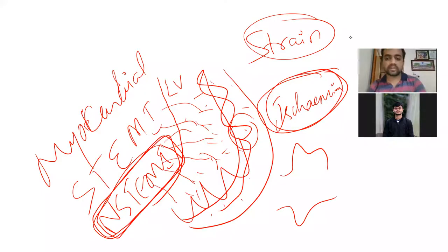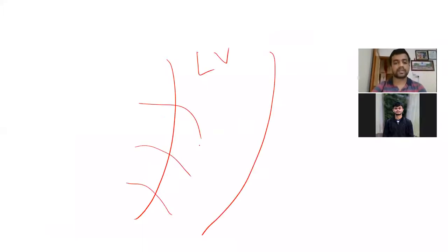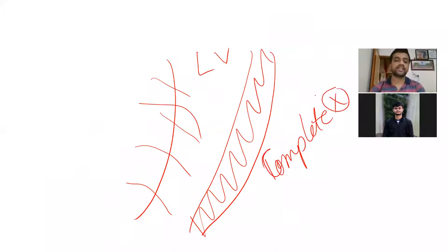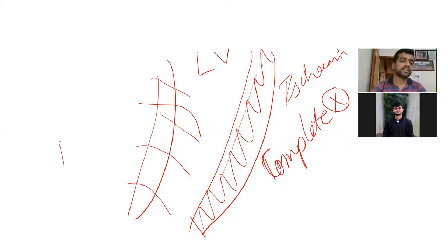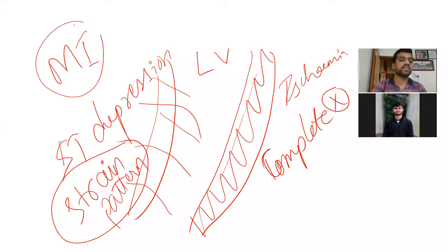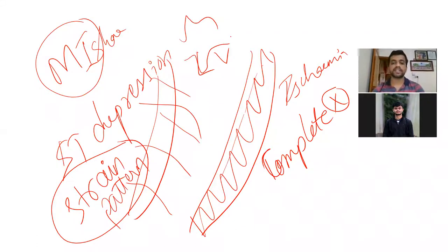ST depression occurs in hypertrophy because the myocardium of the left ventricle has hypertrophied beyond what the existing blood vessels can supply. This creates ischemia, which is depicted on ECG as ST depression — referred to here as the strain pattern. Myocardial ischemia can present as either ST elevation or ST depression; in the case of hypertrophy, we see ST depression.